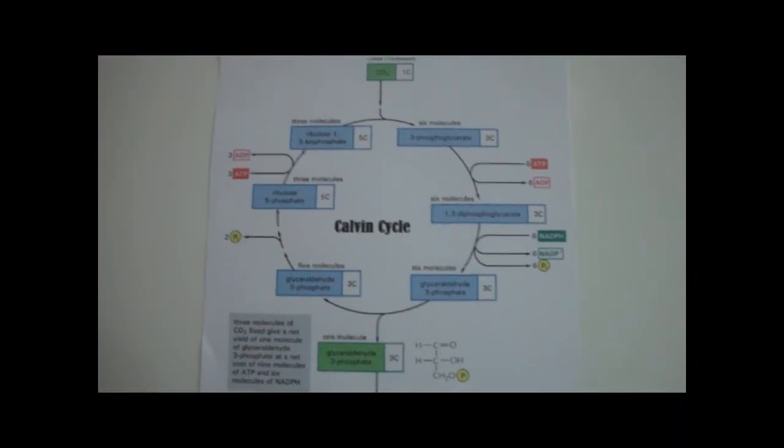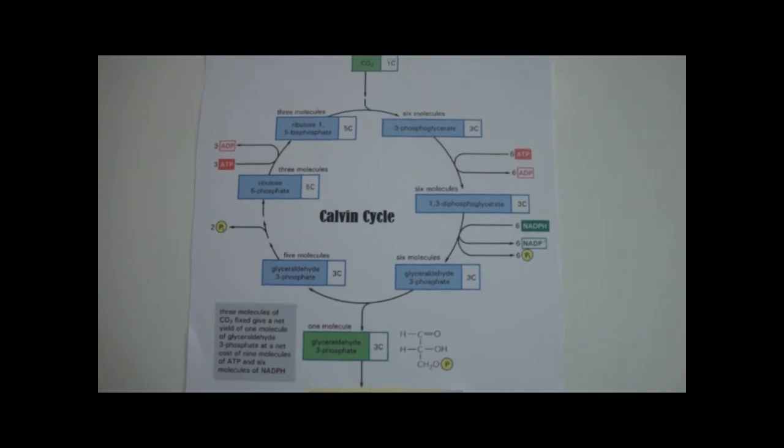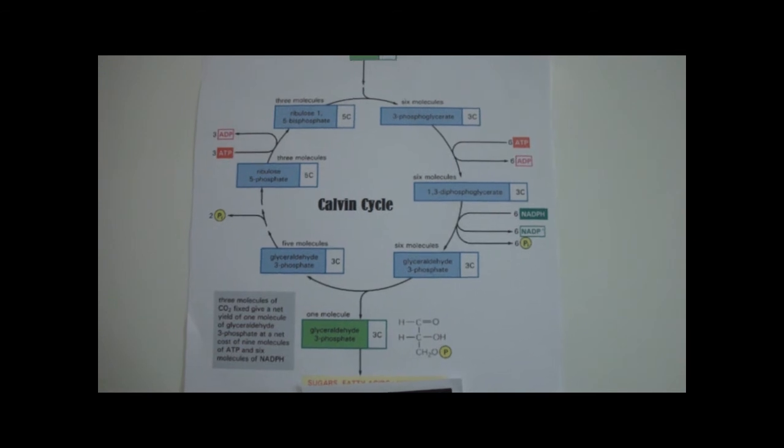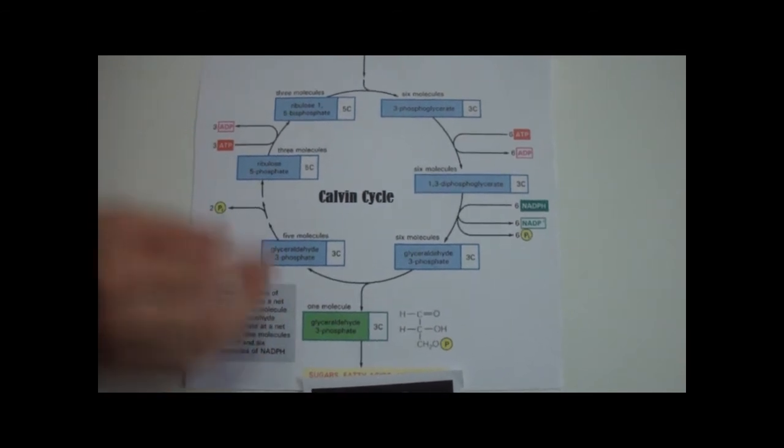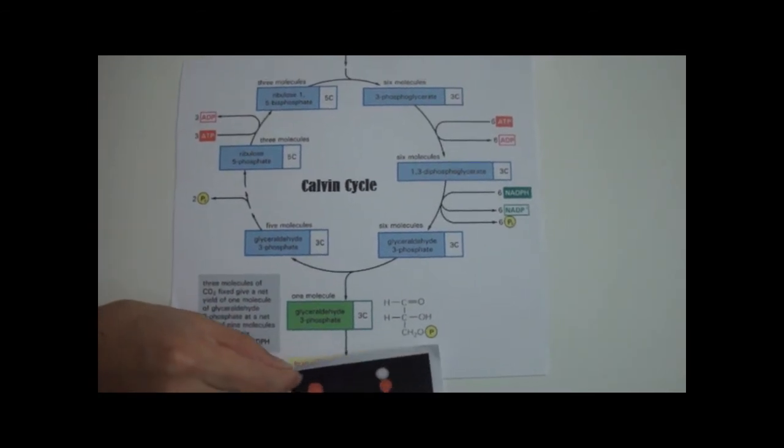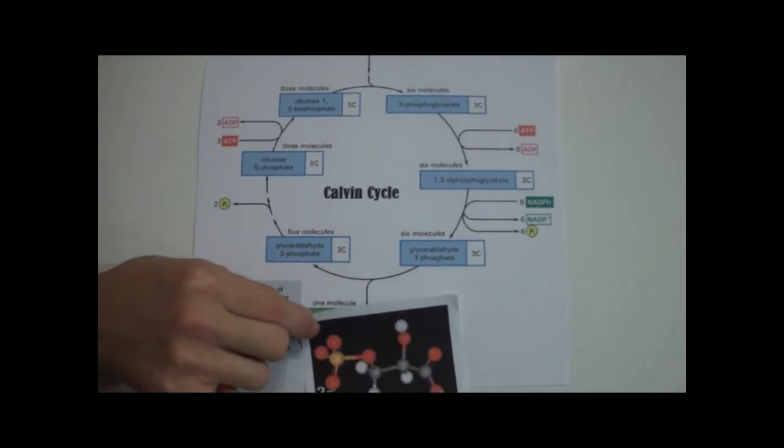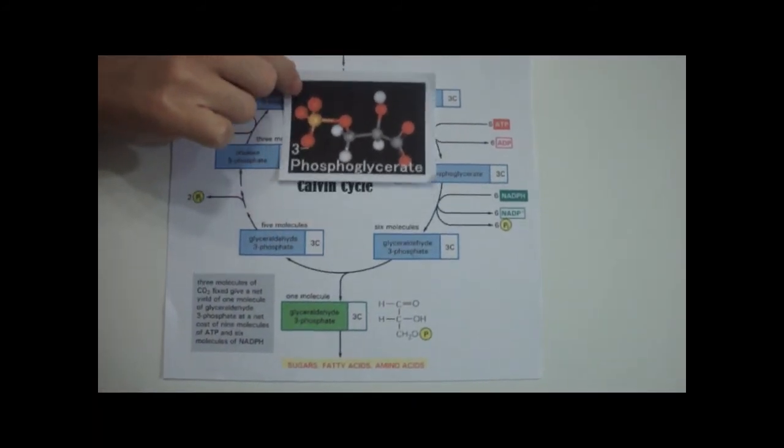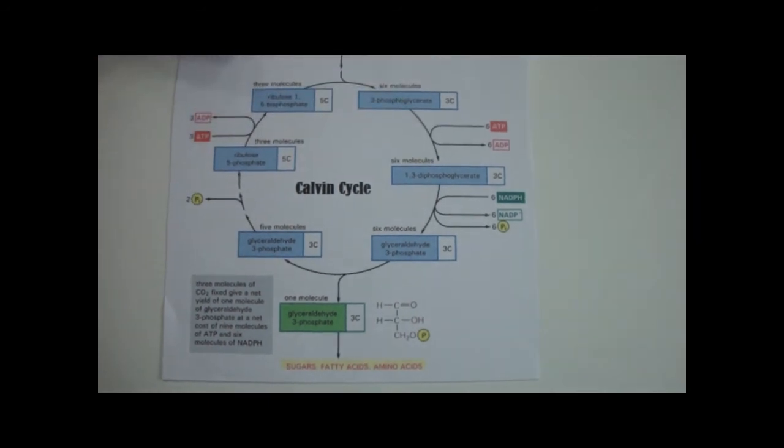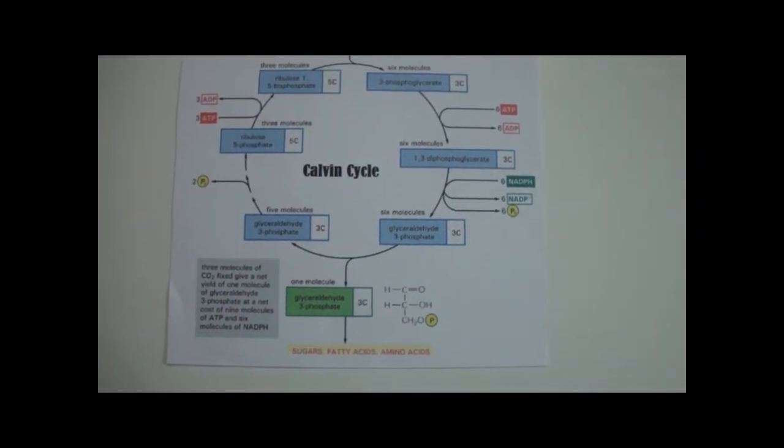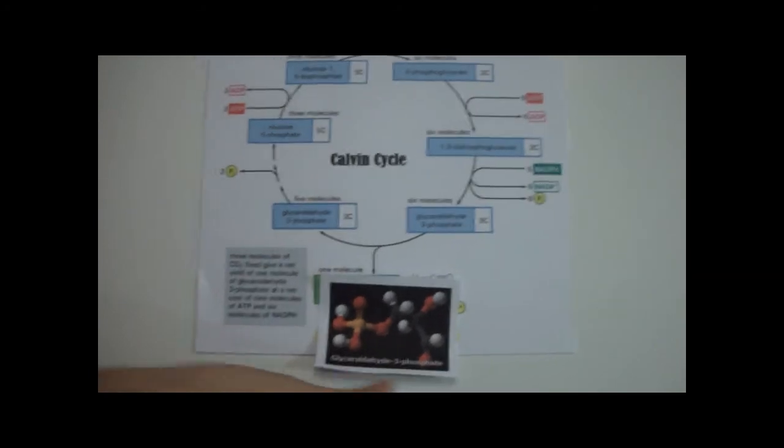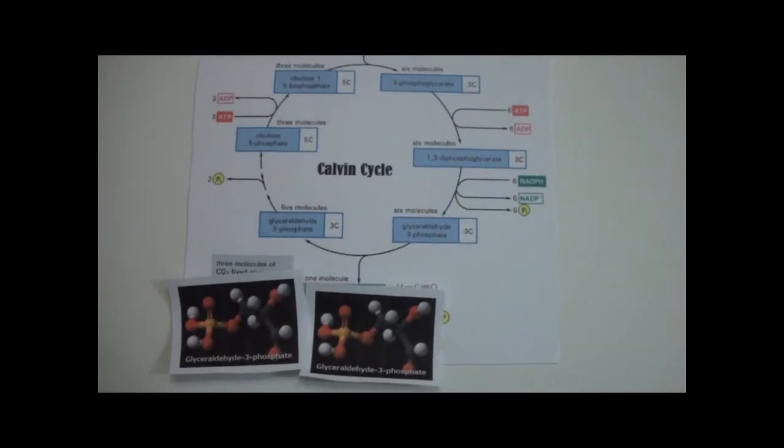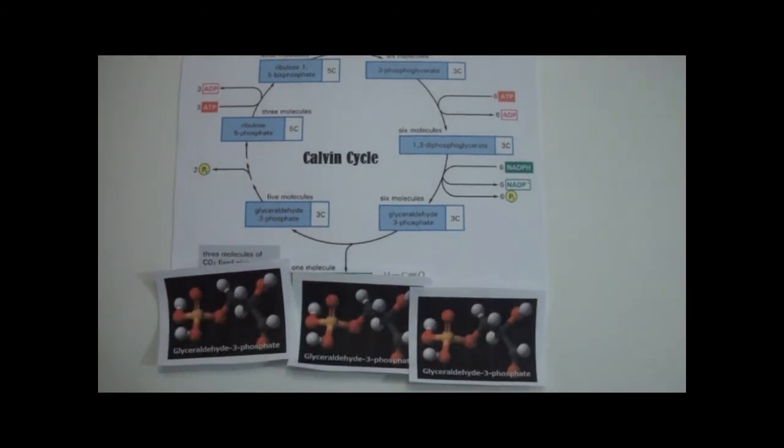The 3-phosphoglycerate undergoes the next step of the Calvin cycle, reduction. The six molecules first gain phosphate from ATP, becoming 1,3-bisphosphoglycerate. Each one is then reduced using NADPH, losing the phosphate molecule in the process, and is converted into a molecule known as G3P. Thus, for every three carbon dioxides that are fixated, six G3P sugar molecules are produced.